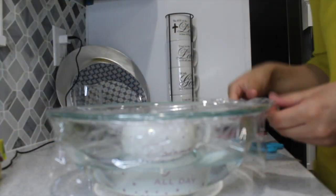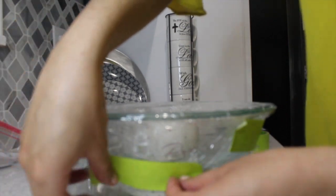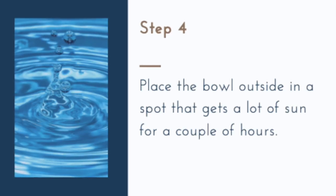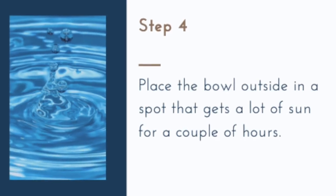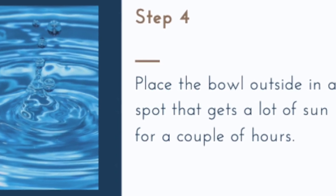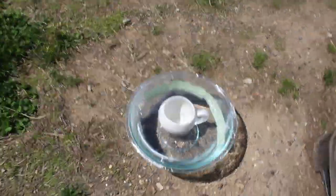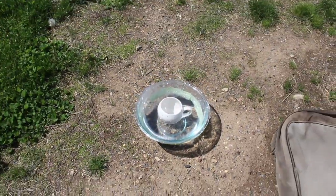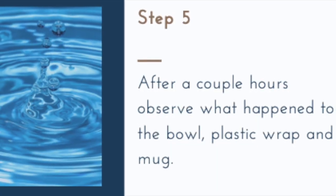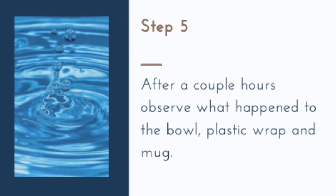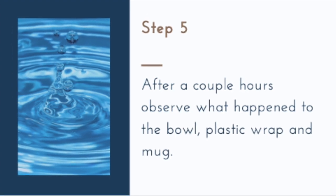If you don't have any plastic wrap you could cut the ziploc bags and use that as a wrapping. Next place the bowl outside in a spot that gets a lot of sun for a couple of hours. After a couple of hours, observe what happened to the bowl, the plastic wrap, and the mug.